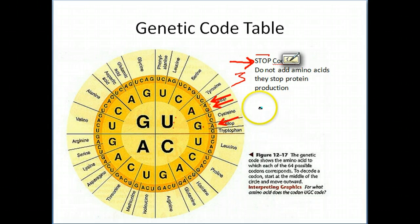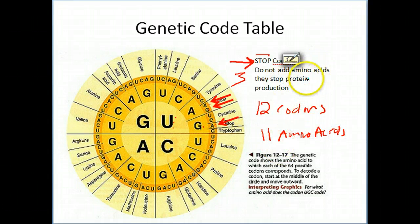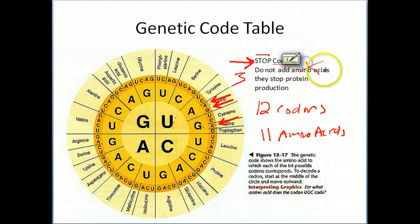So let me repeat that. For instance, if you get 12 codons in your messenger RNA sequence, chances are you're only going to get 11 amino acids. That is because that last stop codon does not specify an amino acid. So you don't get an amino acid from that. So that's another special circumstance of this genetic code table.